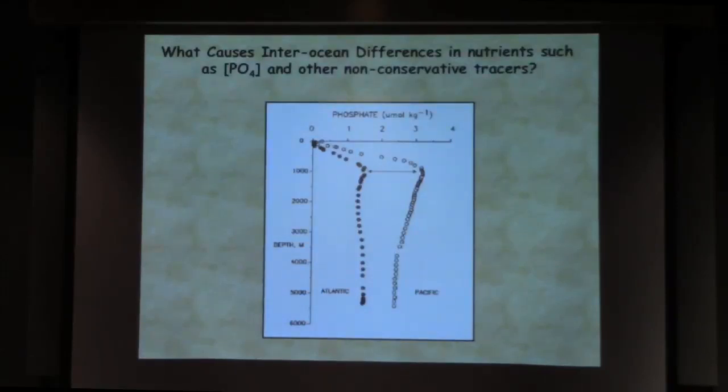Number one, you see much, much lower nutrient concentrations in the Atlantic than in the Pacific. And pretty much once you hit this sort of 800-meter range where you have these maxima, things are pretty constant all the way to the bottom, unlike the Pacific.